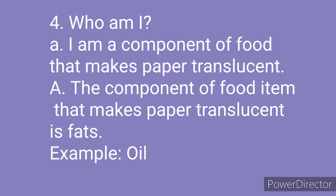Fourth question, part A: Who am I? I am a component of food that makes paper translucent. Translucent means semi-transparent — you can see lightly through it. Answer: The component of food that makes paper translucent is fats. For example, if you apply some oil or ghee to a paper, it becomes translucent. So, fats make the paper translucent.